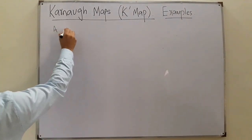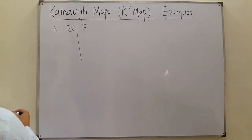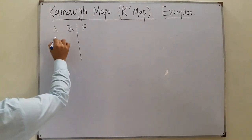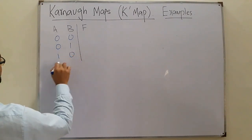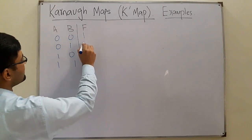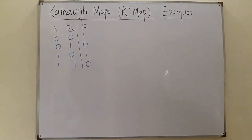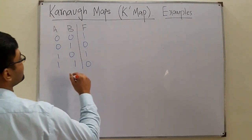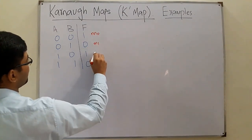Let's deal with a two-variable K-map. We have variables A and B and the function F. The number of input combinations is 2² = 4, so we have: 00, 01, 10, and 11. The function values are 1, 0, 1, 0, which means m0 and m2 are high.